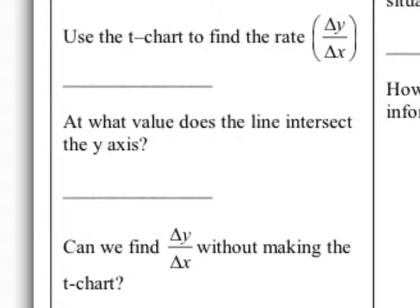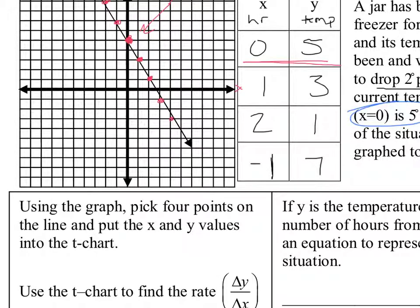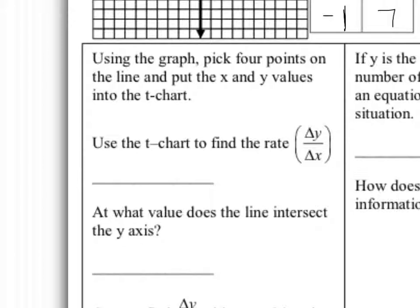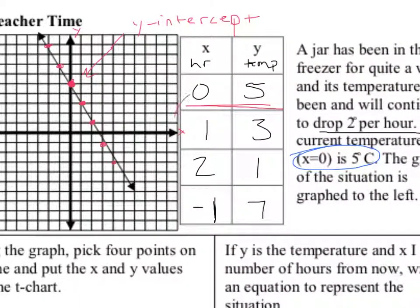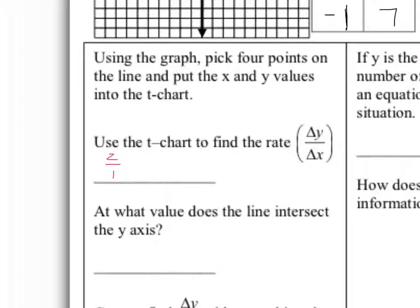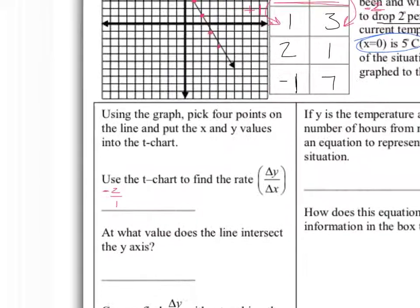We've been doing this for 2 days now — go ahead and use the T-chart to find the rate. What was our change in y over our change in x? The answer was 2 over 1, but I want to push back on that. The change in x increased by 1, and the change in y was a change of 2 — but we have to be very clear: was this an increase or a decrease? It was a decrease, so we need to say that this is negative 2. My change in y over my change in x was negative 2.